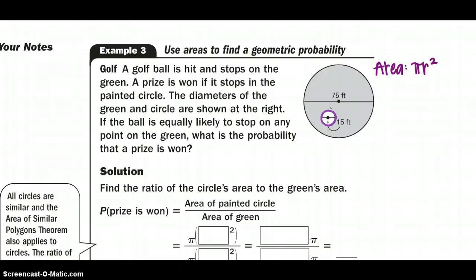So we see two circles there. So we know to find the area, we have to use the area of a circle, which is pi r squared. They have given us both diameters, so let's make sure we have our radius. So the radius of the green is going to be half of 75, which is 37.5 feet. And the radius of our painted, or our cup, we could call it, is half of 15, which is 7.5 feet.